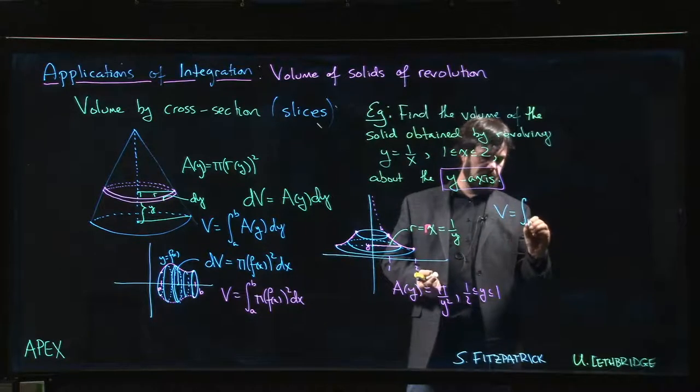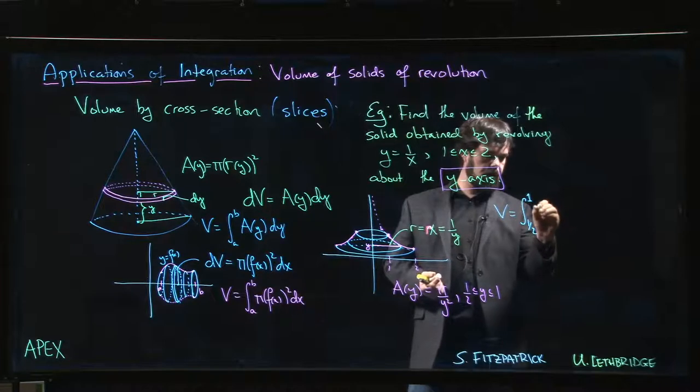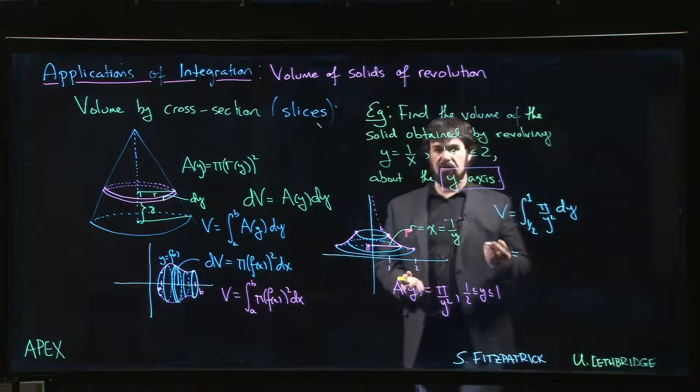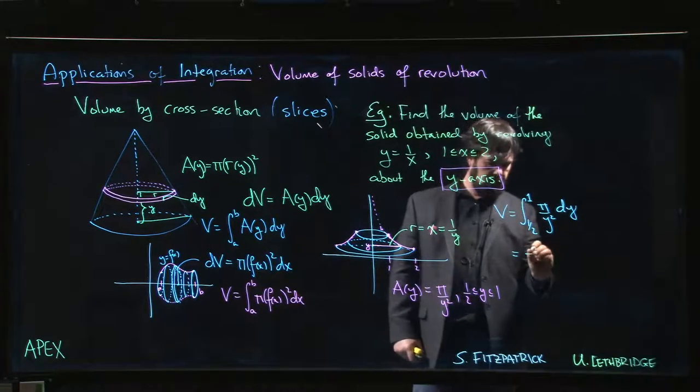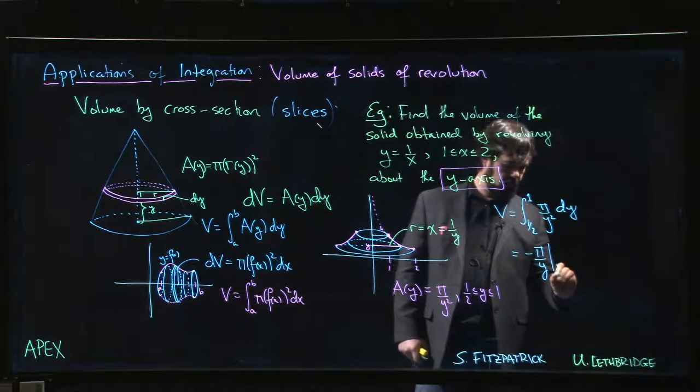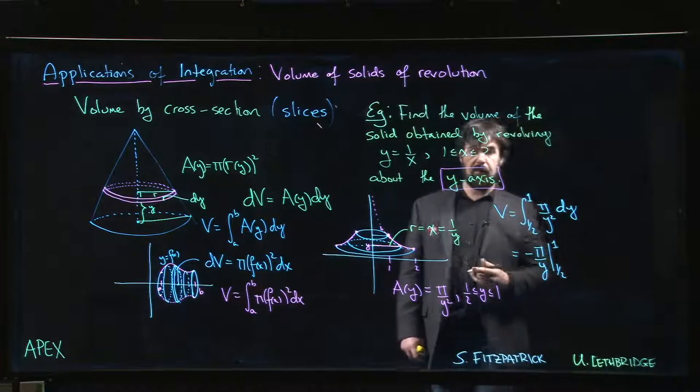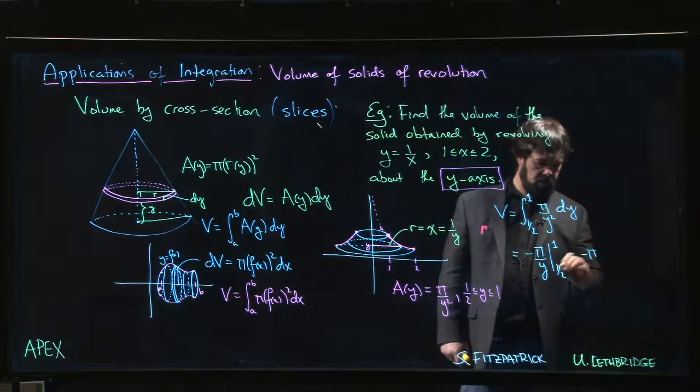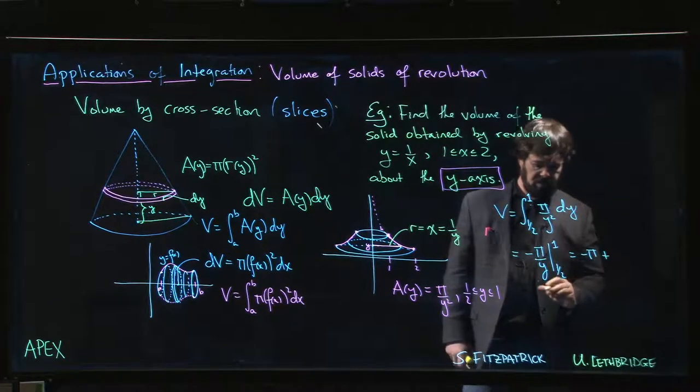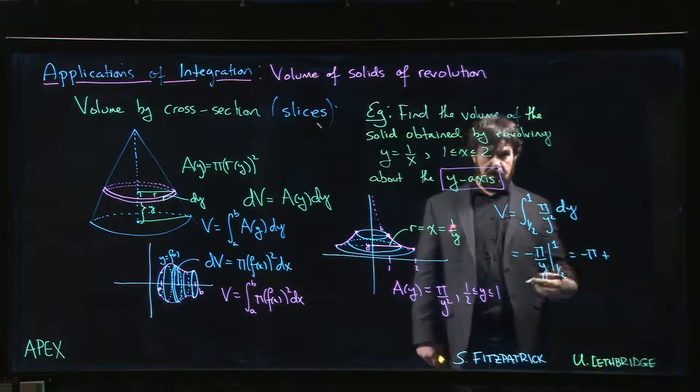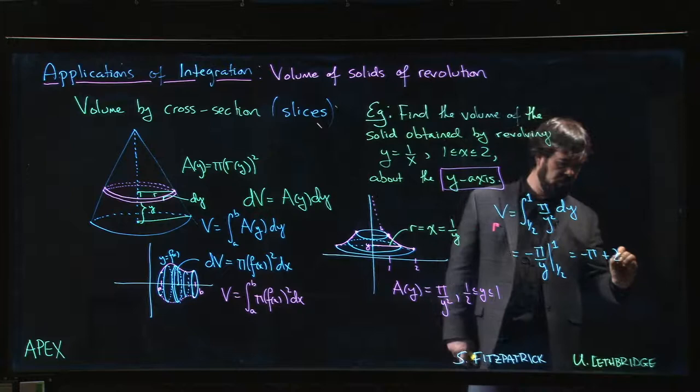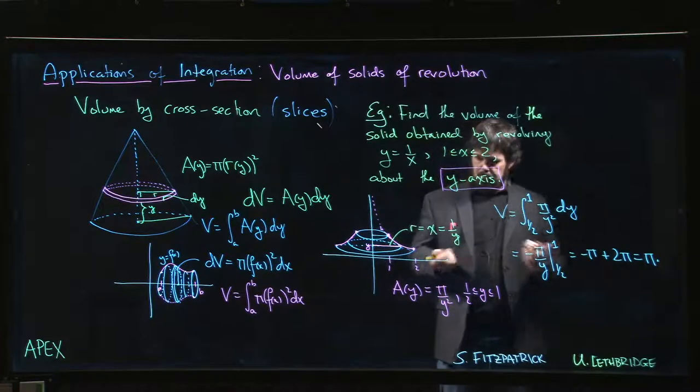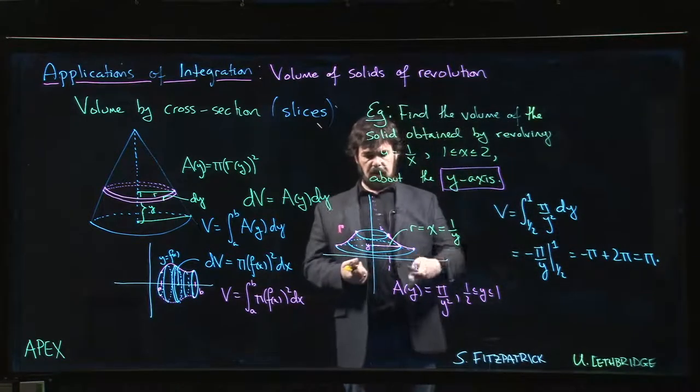The integral is going to be from 1 half to 1, π over y squared dy. The integration step same as before: minus π over y. The only difference is limits of integration are different. We get minus π over 1 minus, minus becomes plus π divided by 1 half. π divided by 1 half—dividing by 1 half is the same as multiplying by 2—so we get π plus 2π, so we get a value of π for that integral.